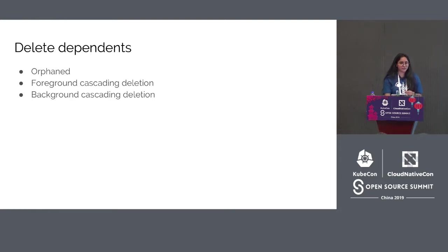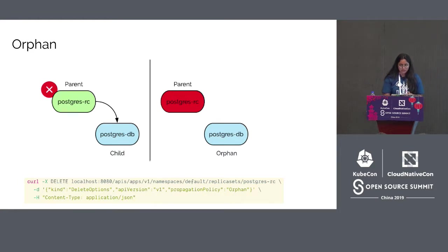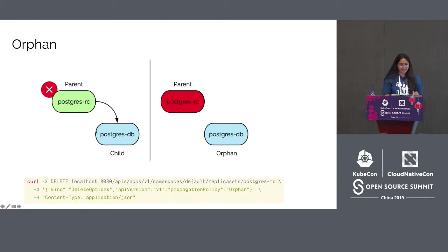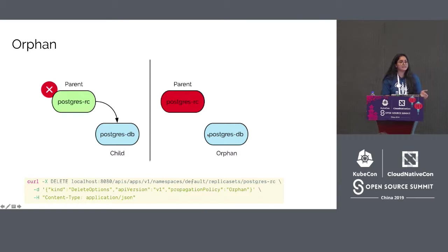Here is an example of orphaned deletion. Postgres-RC is a replication controller with a pod named Postgres-DB. Postgres-RC is the owner object and Postgres-DB is the child object. Postgres-RC is being deleted with a propagation policy set to orphaned. The owner object Postgres-RC is deleted without deleting Postgres-DB, thus making it an orphan object, which is later cleaned by the garbage collector workers.